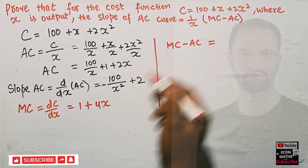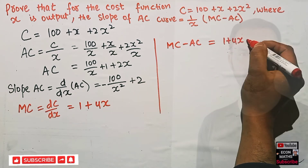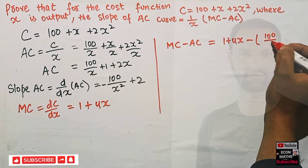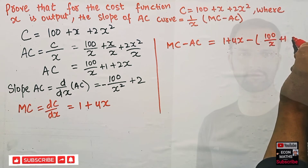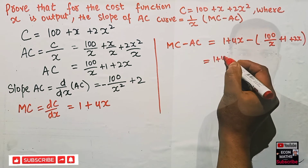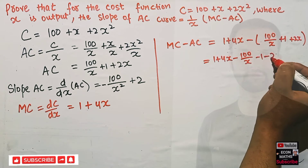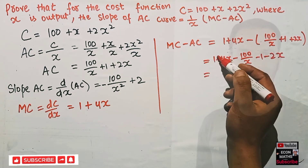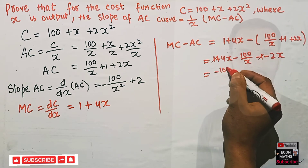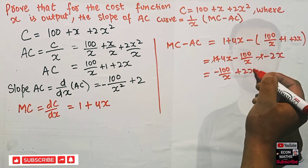Now let's compute MC minus AC. Marginal cost is 1 + 4x, and average cost is 100/x + 1 + 2x. So MC − AC = (1 + 4x) − (100/x + 1 + 2x) = 1 + 4x − 100/x − 1 − 2x. The ones cancel, and 4x − 2x = 2x, giving us MC − AC = 2x − 100/x.